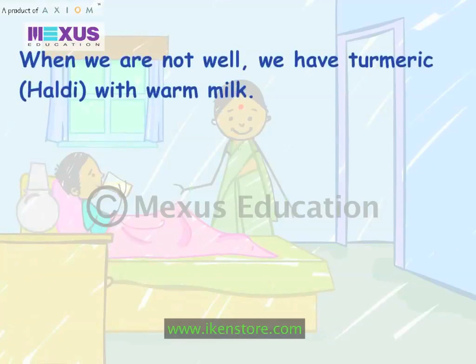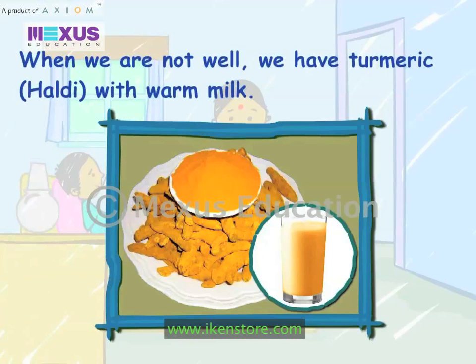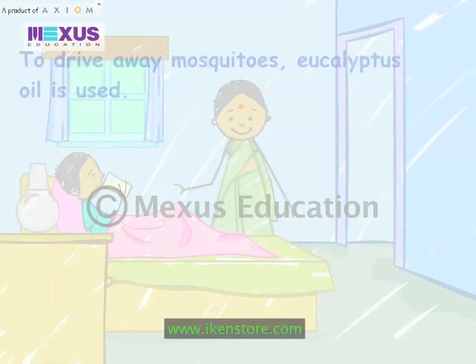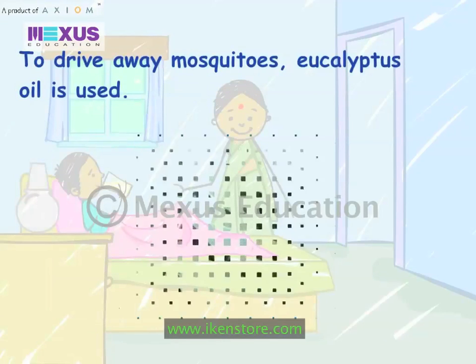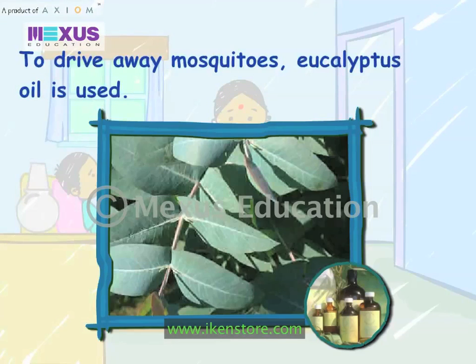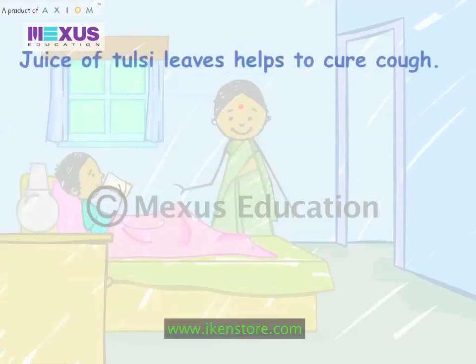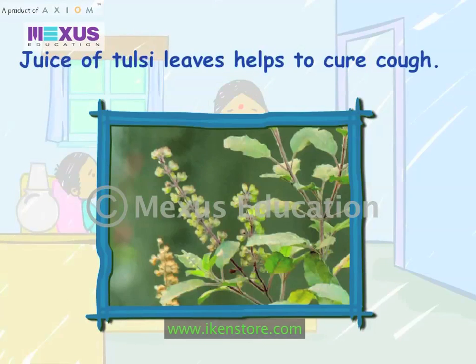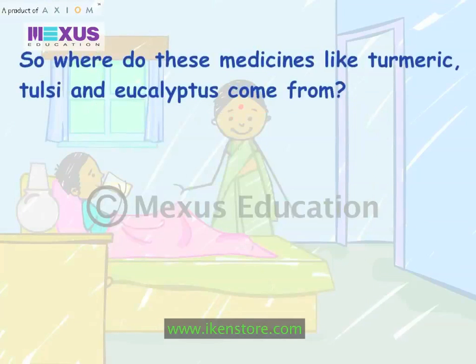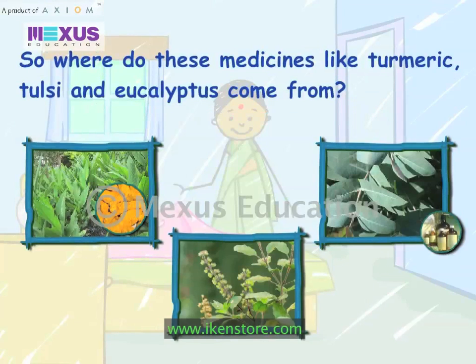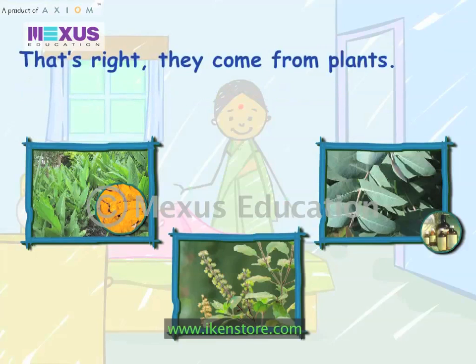When we are not well, we have turmeric, haldi, with warm milk. To drive away mosquitoes, eucalyptus oil is used. Juice of tulsi leaves helps to cure cough. So, where do these medicines like turmeric, tulsi and eucalyptus come from? That's right, they come from plants.